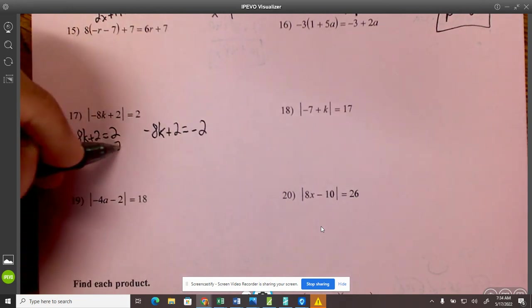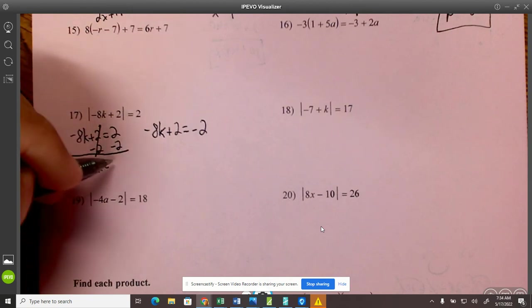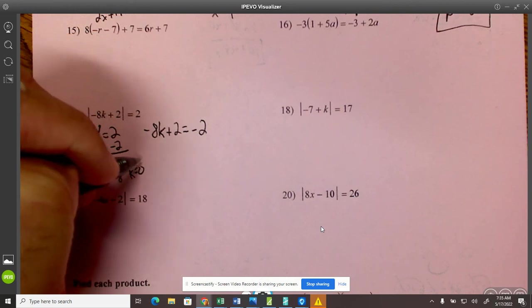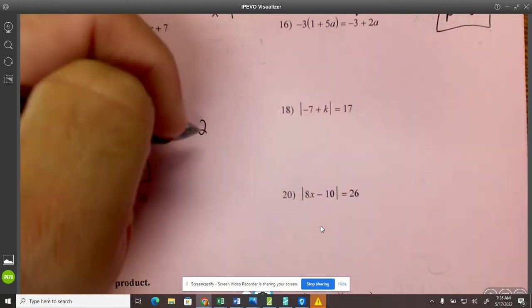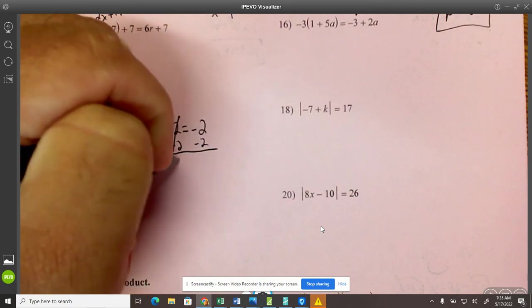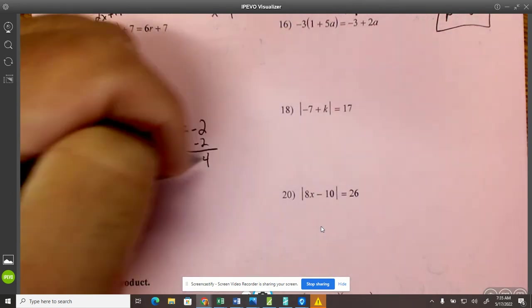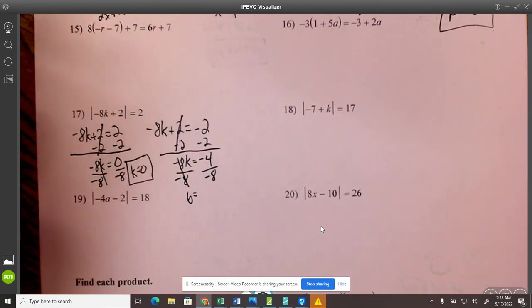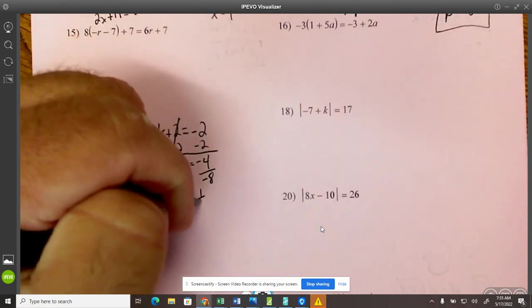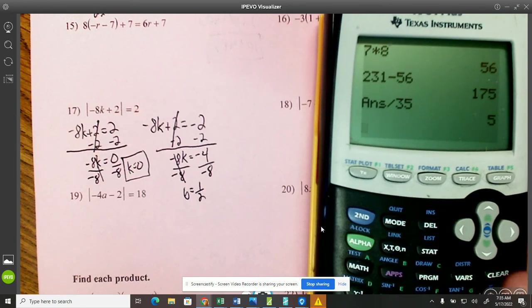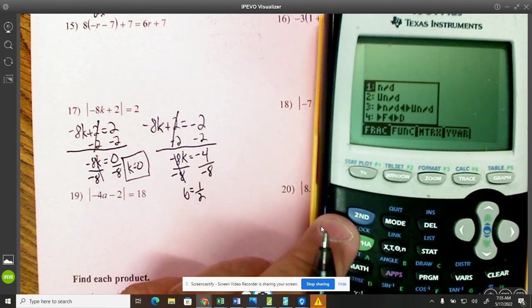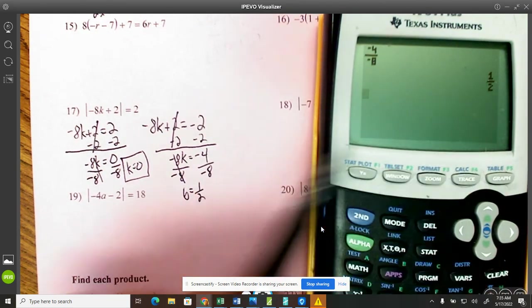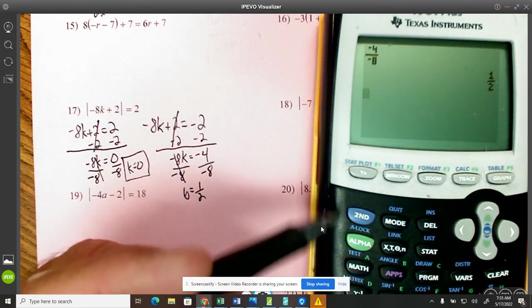So then I'm going to subtract 2 from both sides. Negative 8K equals 0. And then when I divide by negative 8, K equals 0. I'm going to subtract 2. So negative 8K equals negative 4. Divide by negative 8. So K equals, and I'm going to reduce this. First of all, the negatives go away. Second of all, 4 over 8 can be reduced to 1 half. Now, you could put it in your calculator like this. Alpha Y equals, enter, negative 4 over negative 8. And it'll simplify and do everything for you also over 1 half. Alpha Y equals, enter.